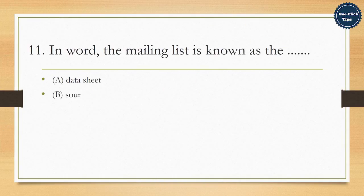11. In Word, the mailing list is known as the A. Data sheet, B. Source, C. Data source, D. Sheet. The correct answer is C. Data source.